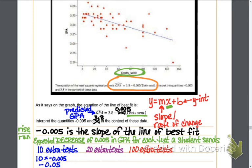With 20 extra texts, I'm going to take that slope, negative 0.005. I'm going to multiply it by the 20 extra text messages sent. And when I do that, I see that there would be an expected decrease of 0.1 in their GPA.